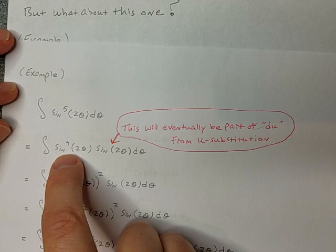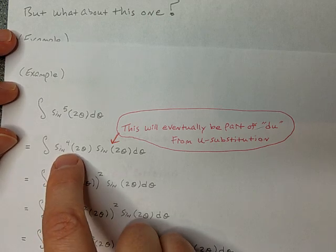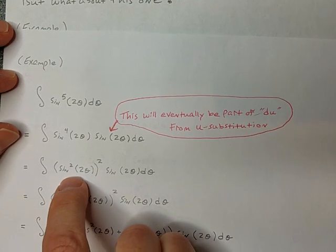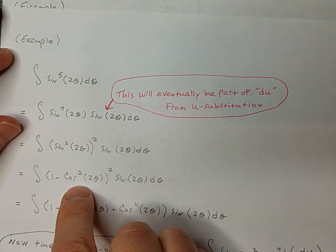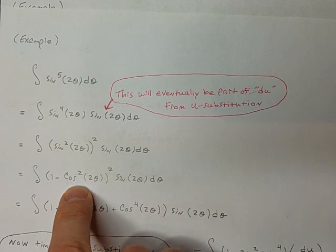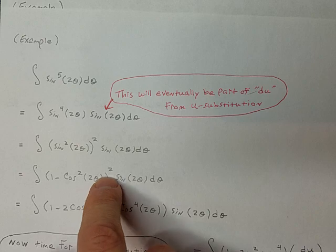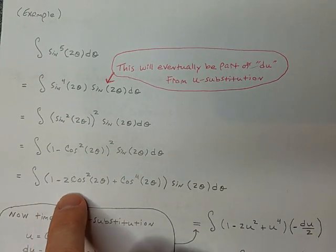So we need to turn this into cosine. So we say, well, we want a sine squared out of that, because sine squared has an identity to turn it into one minus cosine squared. So we get one minus cosine squared quantity to the second power, and we do a little bit of algebra.